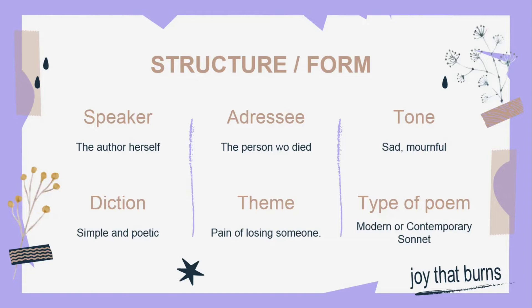This type of poem is considered a modern or contemporary sonnet because it has 14 lines and is written in iambic pentameter. The reason it is considered a modern or contemporary sonnet is because it does not adhere to the rules, form, and structure of traditional sonnets like Shakespearean and Italian. It does not follow a rhyme scheme — that's what makes it a modern or contemporary sonnet.